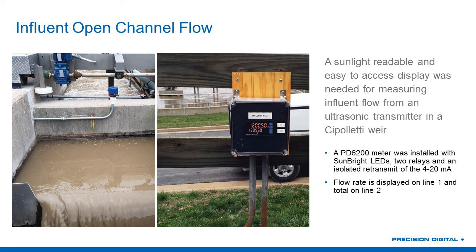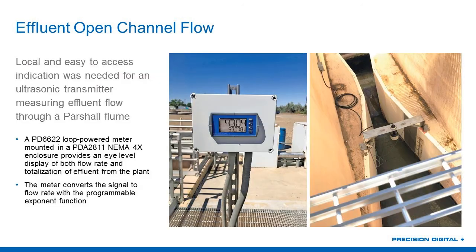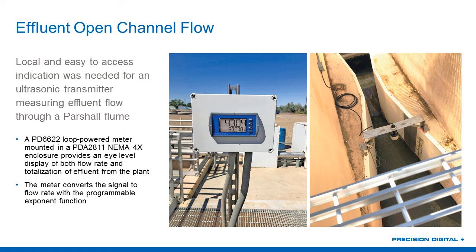The last question we're going to take — we're just about out of time — is from Fury, who asked: do we need to offer the enclosure for an outdoor application? The unit you see here, for example, is a panel meter — this is a 1/8 DIN panel meter. It's NEMA 4X from the front, but the back of it has connections. So certainly, if you were going to install this in a NEMA 4X application, you would want to install some kind of a NEMA 4X enclosure around it. That you can provide your own — perhaps you have a control panel already in place that's sealed to NEMA 4. You just put a 1/8 DIN cutout in it and install the panel meter. Or you could use one of our Precision Digital enclosures that already has that cutout, like this PDA-2811 here, which will hold the meter and provide you that NEMA 4X seal.